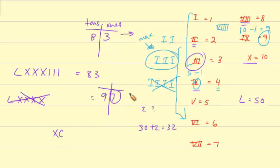And then how would we write 7? We have it right here. VII. So this would be 97.